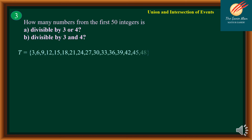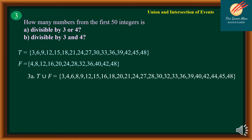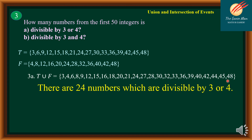Now that we know the elements of T (divisible by 3) and F (divisible by 4), we want to find the union — how many numbers from the first 50 integers are divisible by 3 or 4. Since we use the word 'or,' this is the union T union F. The elements are: 3, 4, 6, 8, 9, 12, 15, 16, 18, 20, 21, 24, 27, 28, 30, 32, 33, 36, 39, 40, 42, 44, 45, and 48 — meaning there are 24 numbers divisible by 3 or 4.